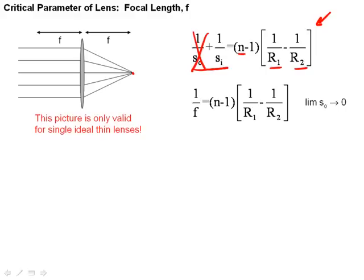At that point, the image distance is called the focal length of the lens. Parallel rays coming in cross at the focal distance f, and the focal length of the lens, which is a critical design parameter, the one thing that's more important than anything else when you look up lenses, is given by this equation right here. But this picture is really only valid for single thin lenses.